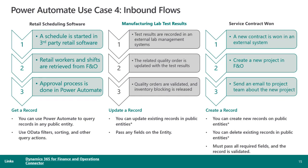Looking at the first scenario with retail schedule software — we're assuming a third-party retail application sits outside of Finance and Operations. Someone in the retail store creates a schedule for when workers need to come in. The retail workers and shifts are retrieved from Finance and Operations and provided into this third-party application. After it's completed, an approval process could be spun off using Power Automate to capture that approval. When using 'get a record,' you can use Power Automate to query records in any of your public entities, using OData filters, sorting, and other query actions.